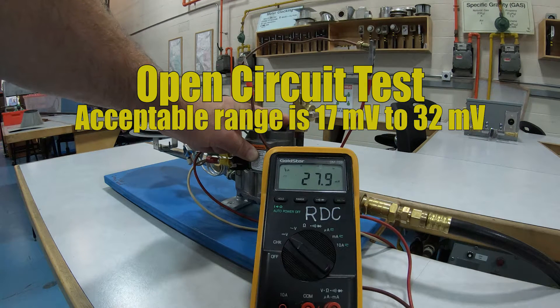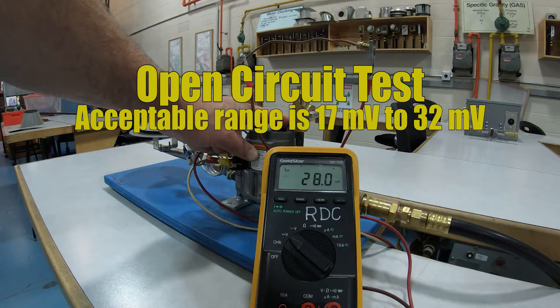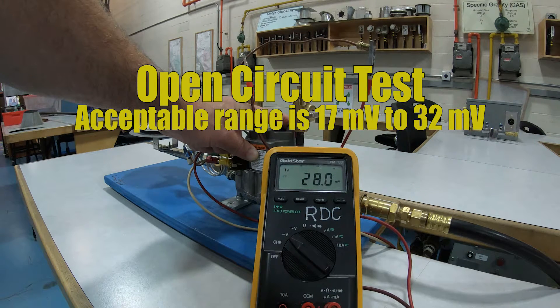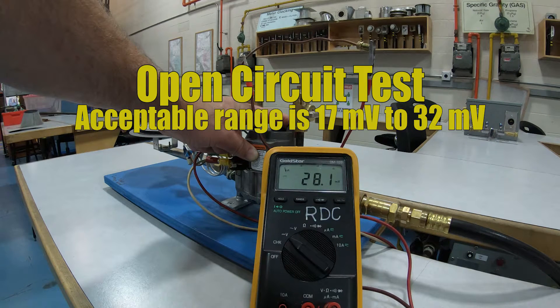Our acceptable range for an open circuit test - this is the open circuit test - is between 17 and 32 millivolts. So we're right in the middle of that. We are happy, we are good to go.